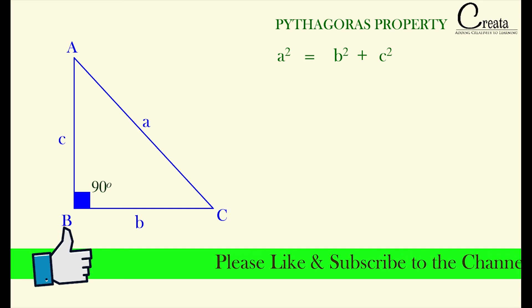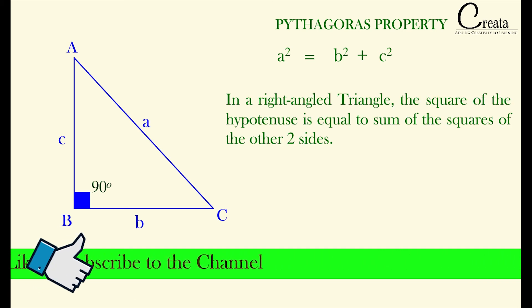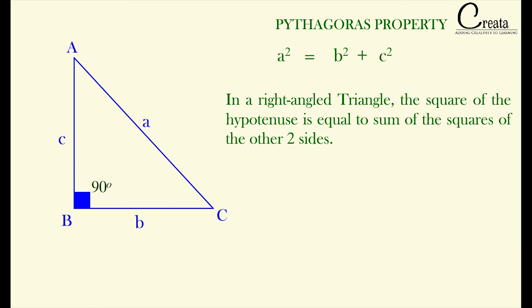The Pythagoras property may be stated as: in a right angle triangle, the square of the hypotenuse is equal to the sum of the squares of the other two sides. This is the famous Pythagoras property — the square of the hypotenuse equals the sum of the squares of the two other sides. This is a very famous equation in both mathematics and physics.